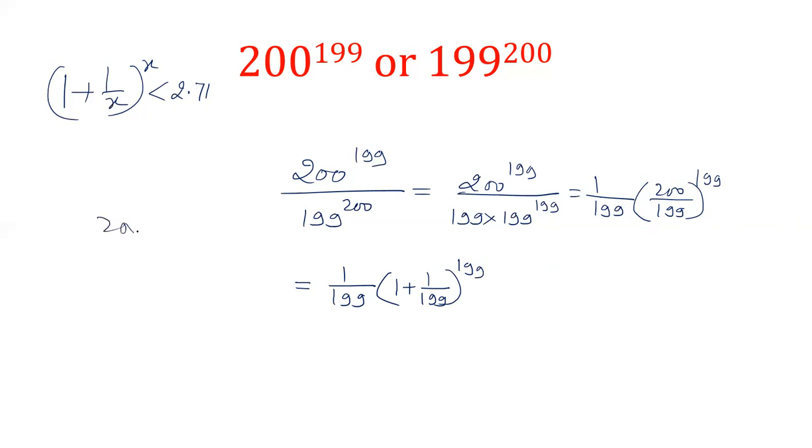200 divided by 199 gives us 1 plus 1 on 199 power 199. This is 1 upon 199 times 1 plus 1 upon 199 power 199. Now this is of the form 1 plus 1 upon 199 power 199. Its value is less than 2.71. So let's keep its maximum value which is 2.71.